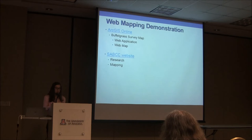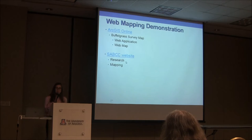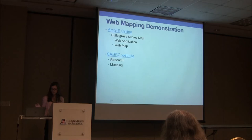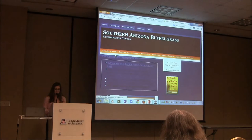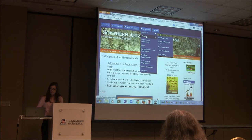I will give a short demonstration of how the web mapping application works. The web map is accessible through ArcGIS Online by searching for 'buffelgrass survey map,' and also through the SABCC website, buffelgrass.org. Right now I'm going to use the Buffelgrass Coordination Center's website. To get to the map, you can go to Resources, then Mapping, then Buffelgrass Map.